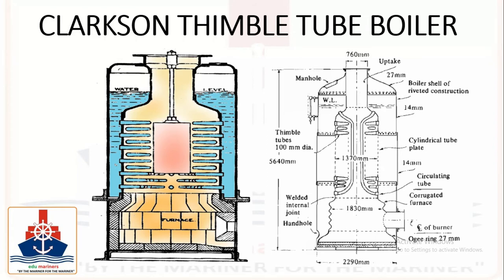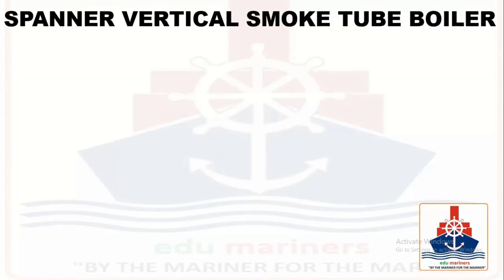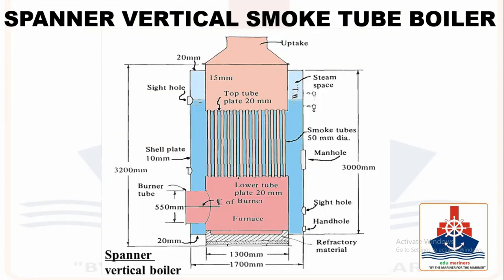The next fire tube boiler is the Spanner vertical smoke tube boiler. The basic form consists of an outer shell enclosing a cylindrical furnace, which is connected by vertical smoke tubes to a cylindrical smoke box at the top. In the early version the boiler shell encloses welded internals, but in later designs the boiler is of all-welded construction.